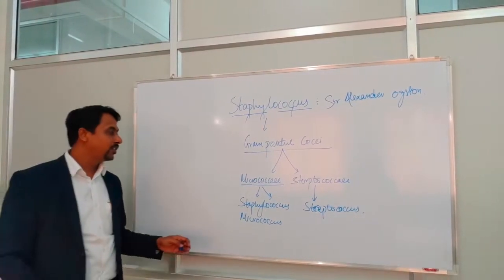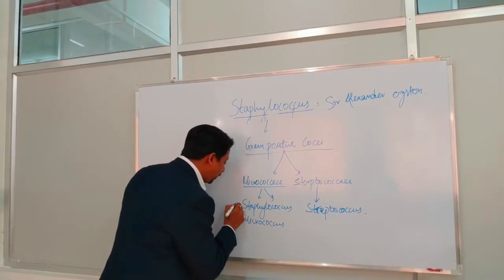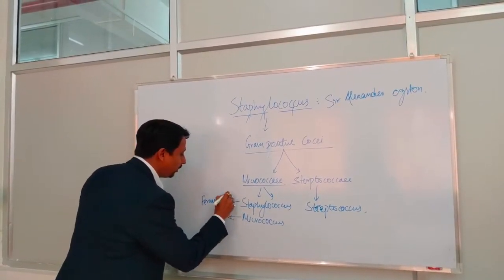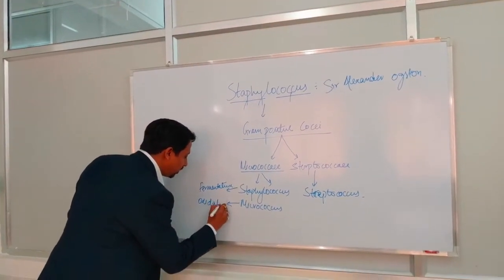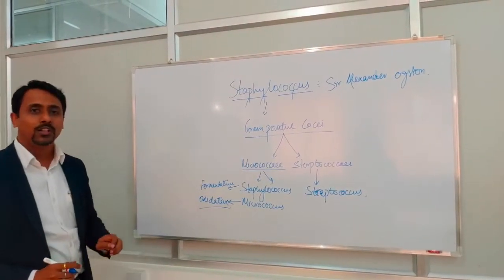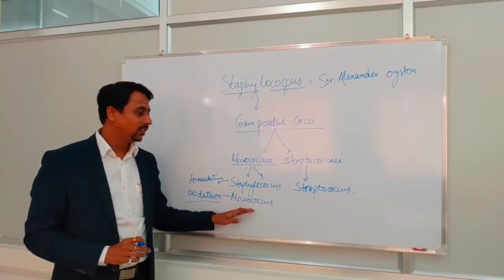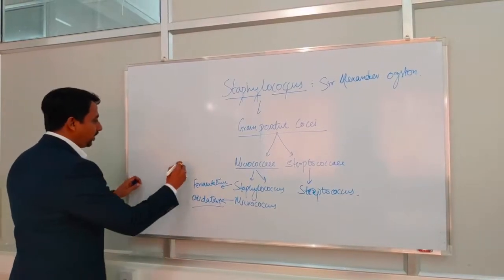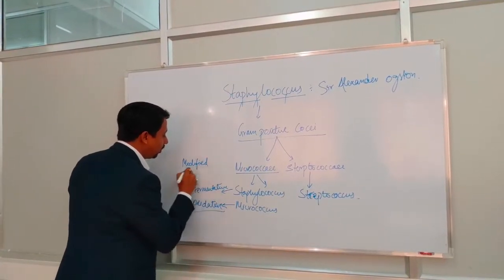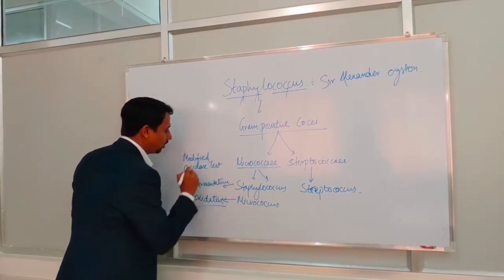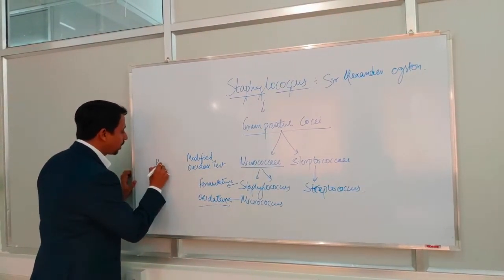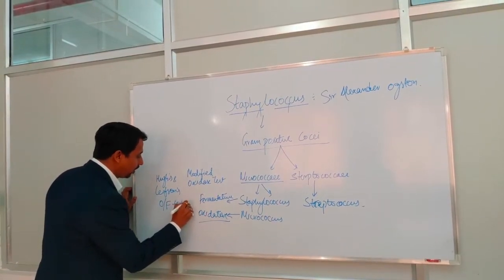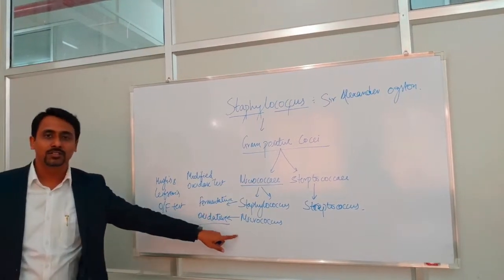To differentiate between these two families of gram-positive cocci, the major difference is that Staphylococcus is fermentative whereas Micrococcus is oxidative. The test used to differentiate them is the modified oxidation-fermentation test, and the specific test which can be asked in examinations is the Hughes and Lifson's oxidation fermentation test.